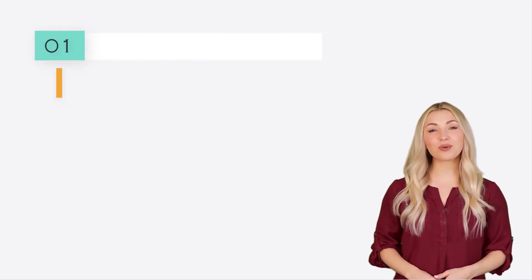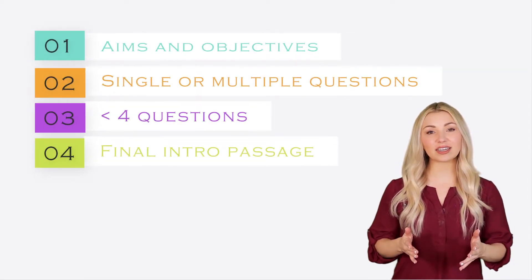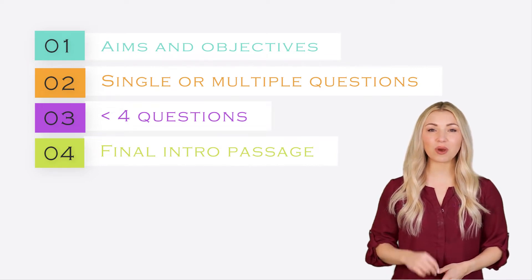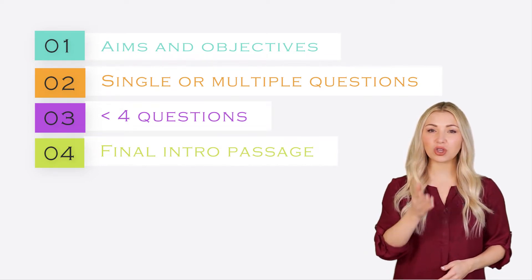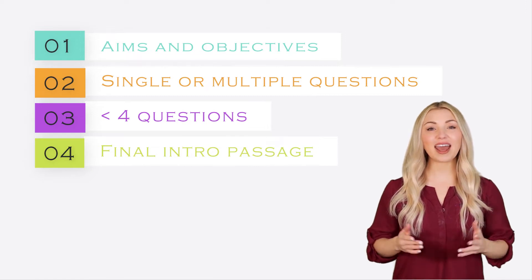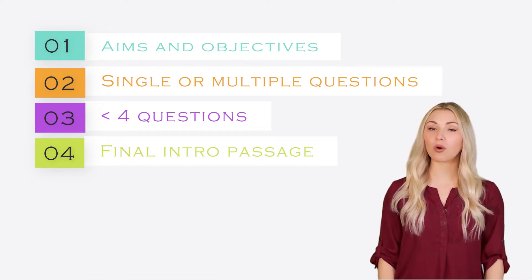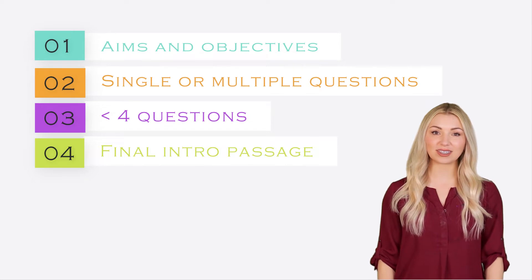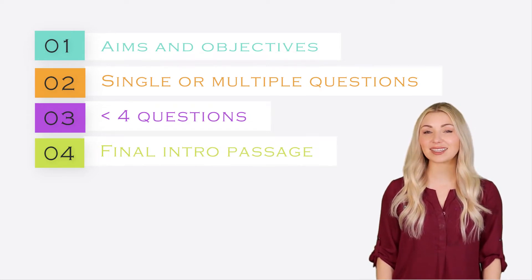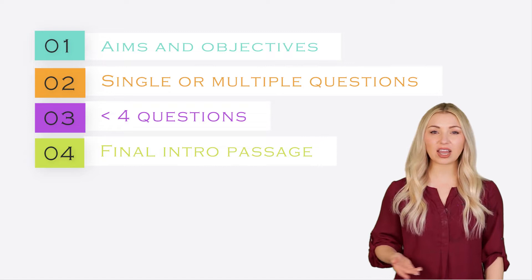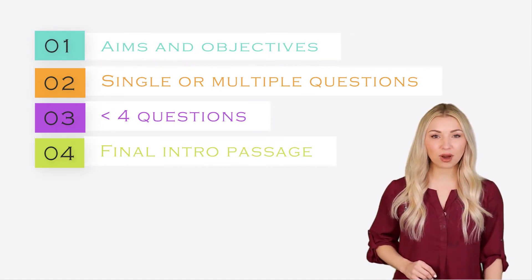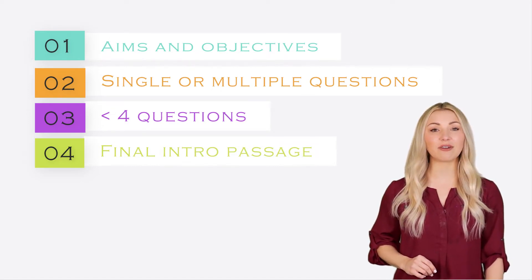The research questions are normally the aims and objectives of your work. The research question pinpoints exactly what it is you want to find out in your work. You can have a single research question or multiple research questions in your paper depending on the complexity of your research. Generally, it is a good idea to keep the number of research questions to less than 4.